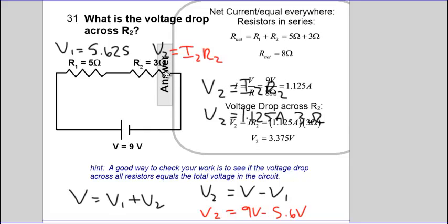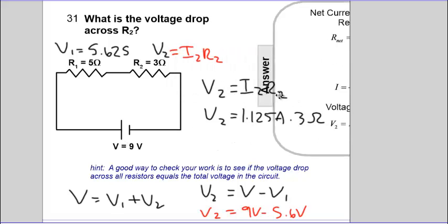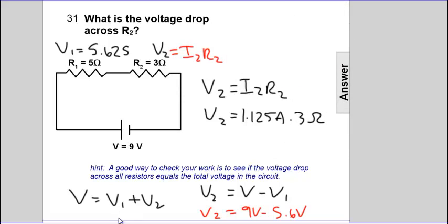Again, V1 plus V2, 5.625 and 3.375 has to take you back to 9 volts. Because what you put into the circuit, energy wise, is what you get out. What goes up must come down. If you go uphill, when you come back downhill, you're going to end up back at the same spot.